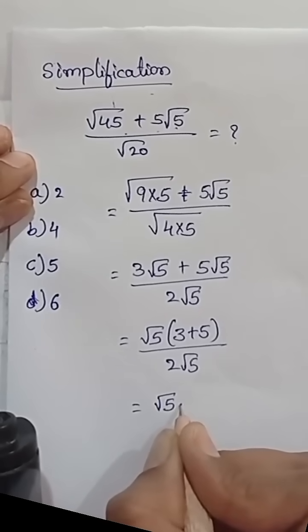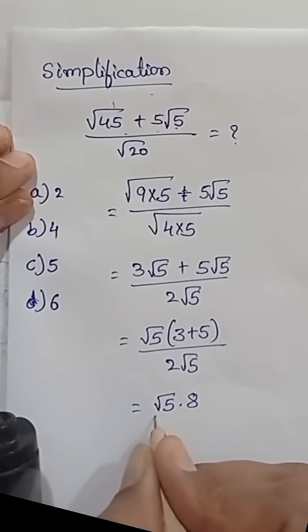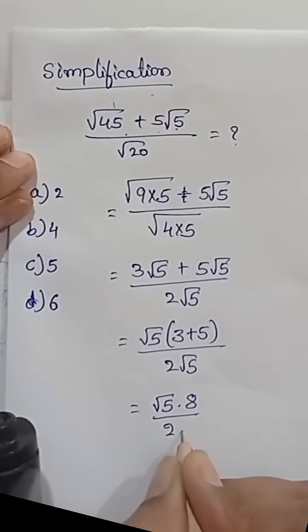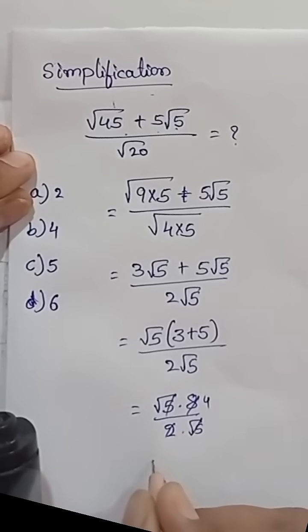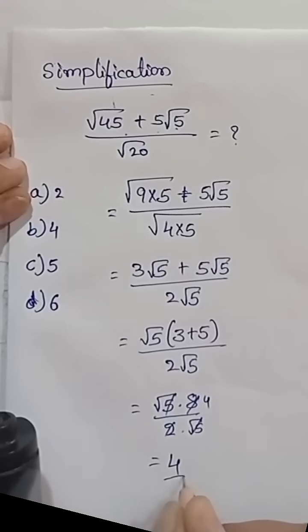So finally we will get square root of 5 into 8 by 2 square root of 5. This square root 5, square root 5 will get cancelled. 8 divided by 2 is 4, so finally we got the value 4. Thank you.